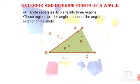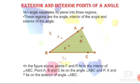How many points are there outside the angle? Point T, point X and point P are lying on the exterior side of the angle. There are some points lying on the angle which are point A, point B and point C.